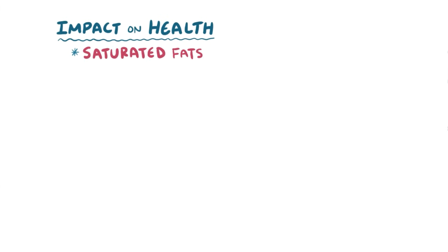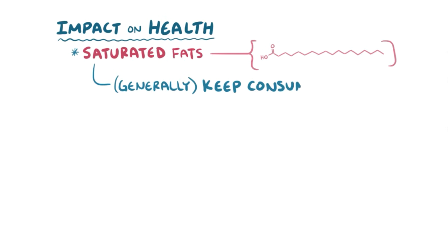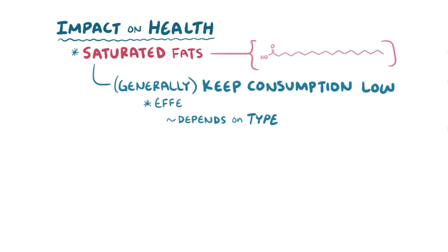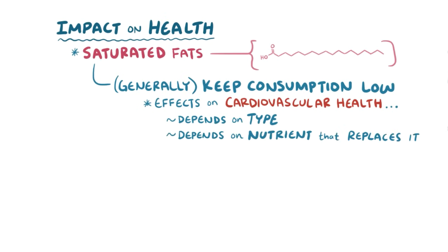The impact of saturated fat on cardiovascular health is a little more complex. Generally speaking, it's recommended to keep consumption of saturated fat low, but just like with unsaturated fats, there are different types of saturated fats. Evidence suggests that different types of saturated fatty acids might have different effects on cardiovascular health, and that the impact of reducing or replacing saturated fat depends on the nutrient that replaces it. For example, replacing saturated fat with polyunsaturated fat has been shown to benefit cardiovascular health, whereas replacing saturated fat with refined carbohydrate has not.